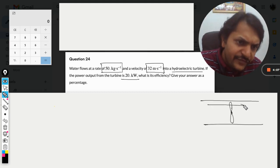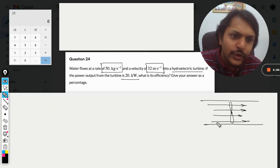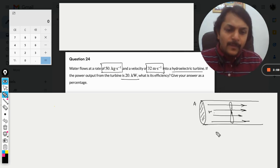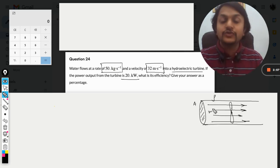The fluid is flowing - the water is flowing with velocity v. The cross-sectional area here is capital A, and the density of the fluid is given as rho.